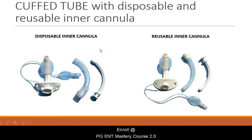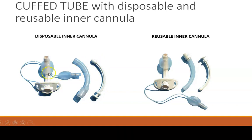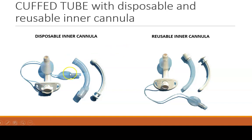Here you can see pictures of cuffed tubes. The first one is a cuffed tube with a disposable inner cannula. The second one is a cuffed tube with a reusable inner cannula. Along with the inner cannula, you can see the obturator, the neck flange, and the shaft of the tracheostomy tube. This is the cuff, and this is where you attach the syringe to check the cuff pressure.